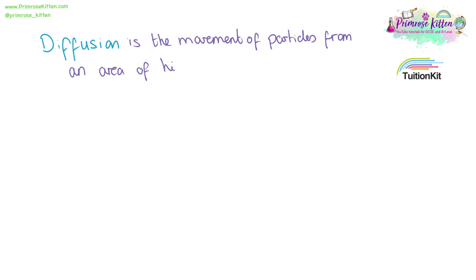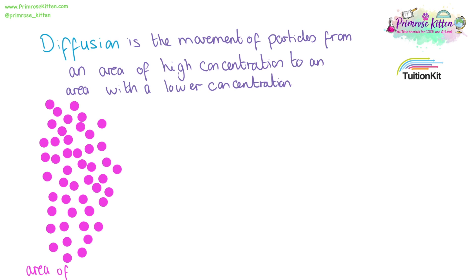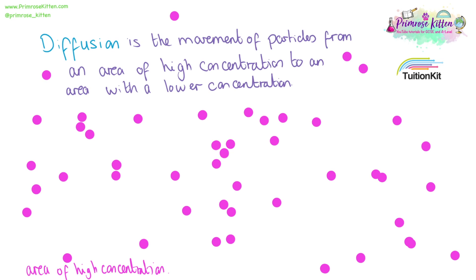Diffusion is the movement of particles from an area of high concentration to an area of lower concentration. Here we have our particles — they are all clustered together, this is an area of high concentration. What we can see happening is the particles moving around in a completely random manner so that they are more spread out, and at the end we end up with an even concentration spread out all over the place.